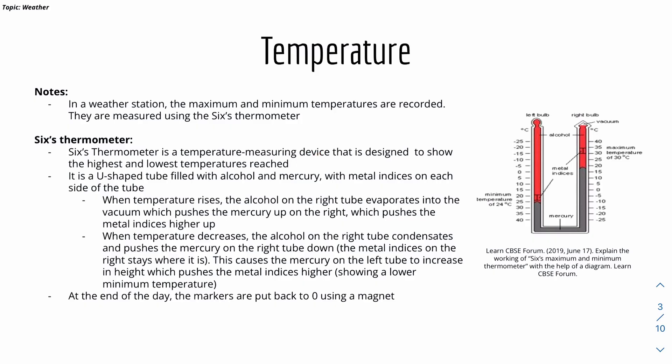How it works is that it's like a U-tube, filled with alcohol, which is the red part, and then filled with mercury at the bottom, with metal indices on each side of the tube. When temperature rises, the alcohol will evaporate.